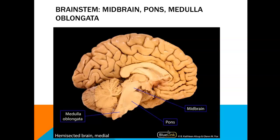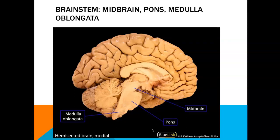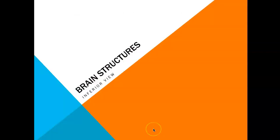Here is a cadaveric view of the brain stem. We have the midbrain superiorly, the pons in the middle, and the medulla oblongata inferiorly. Now let's move into inferior views.